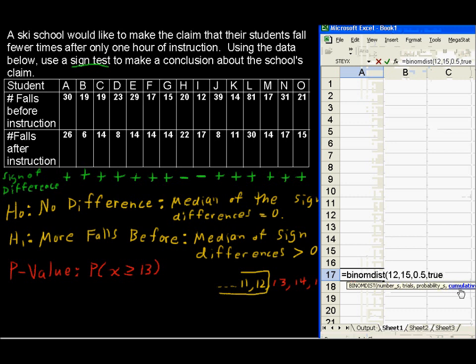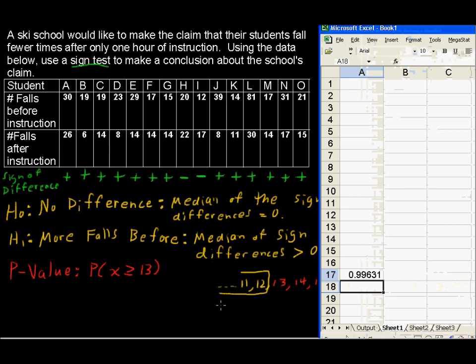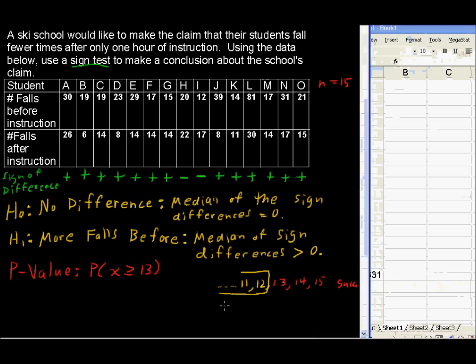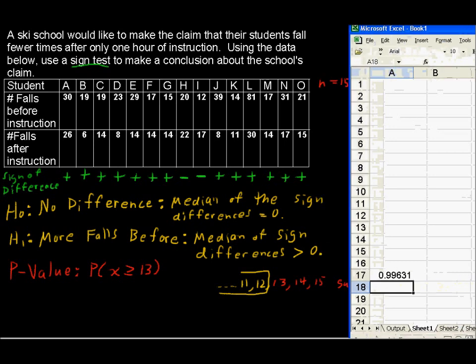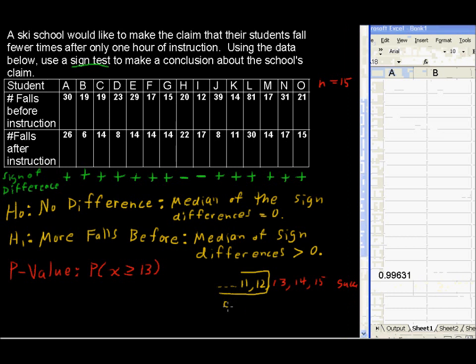Before I hit enter here, I want to let you know this is not going to be the p-value. This is going to be a pretty big probability actually. Very big probability, but we're not looking for this yellow. We just found this probability to be 0.9963.